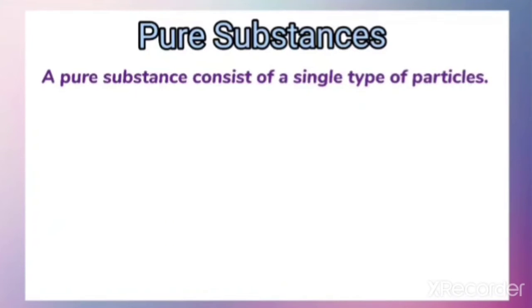A pure substance is defined as consisting of a single type of particle. That means if a matter is called a pure substance, it has only a single type of particle.